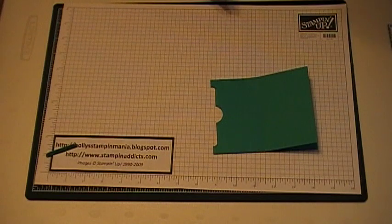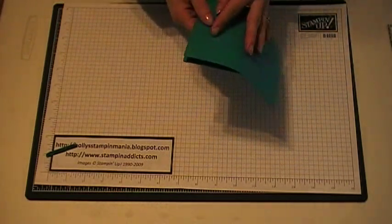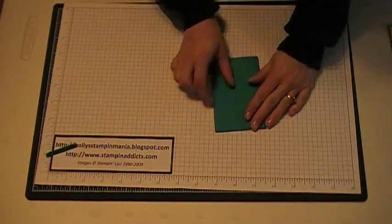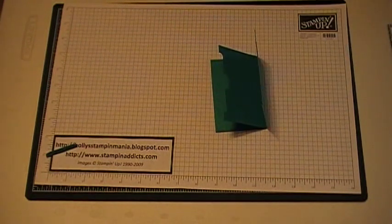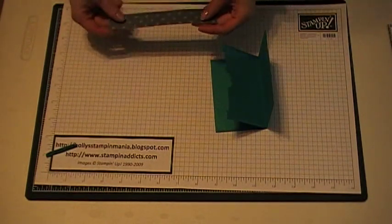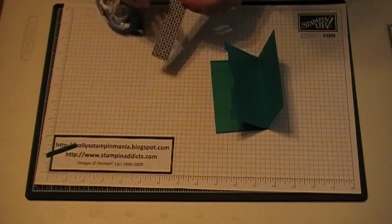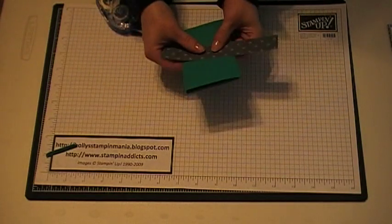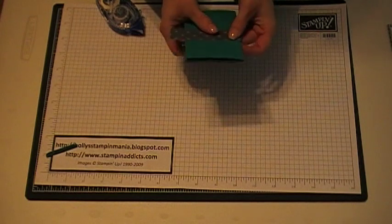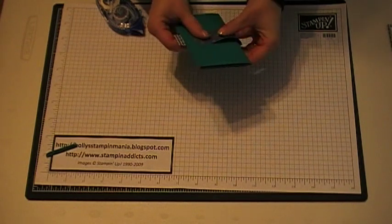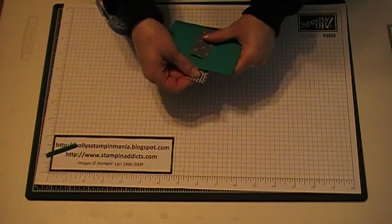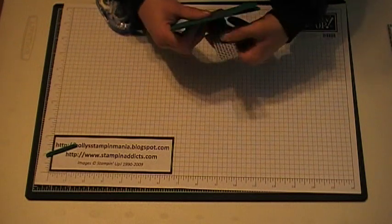Then as far as decorating it, you want to create a belly band. And what I did was I took a piece of our designer paper from the Patterns Pack 2 in our Hostess Sampler, and I'm using the Basic Gray, and I'm just going to wrap this around, and you don't want it too snug because you want to be able to pull this off.